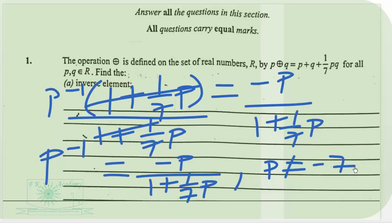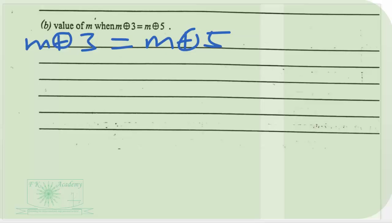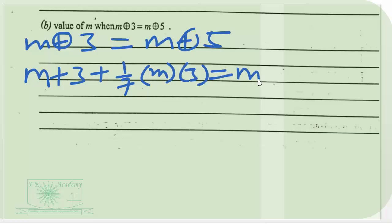Now let's look at part B of the question. We need to find the value of M when M ⊕ 3 = M ⊕ 5. Applying the definition, we have M + 3 + (1/7)(M)(3) = M + 5 + (1/7)(M)(5).